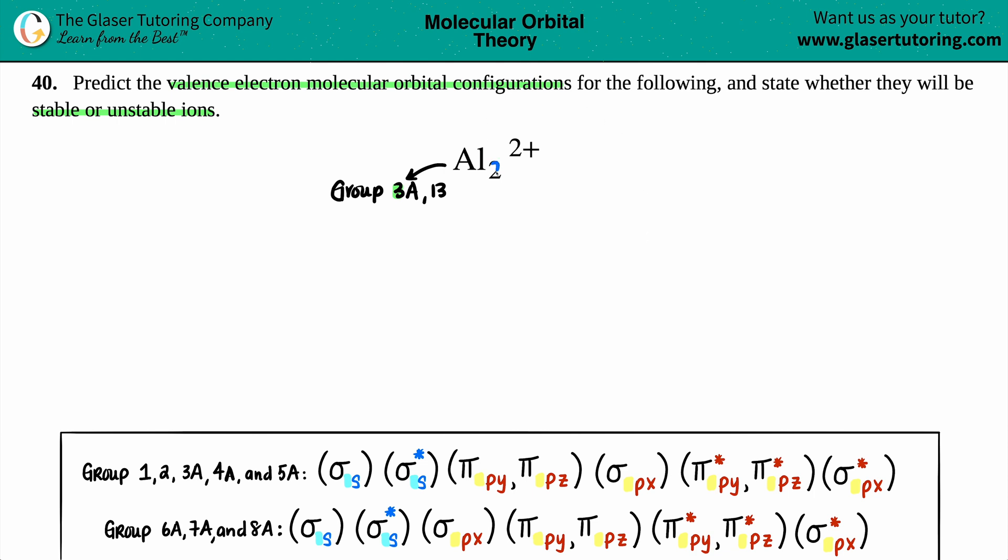But we have 2 aluminums. So if I have 2 aluminums and each of them have 3 valence electrons, I have to times them by 3. So 2 times 3 is 6 valence electrons.